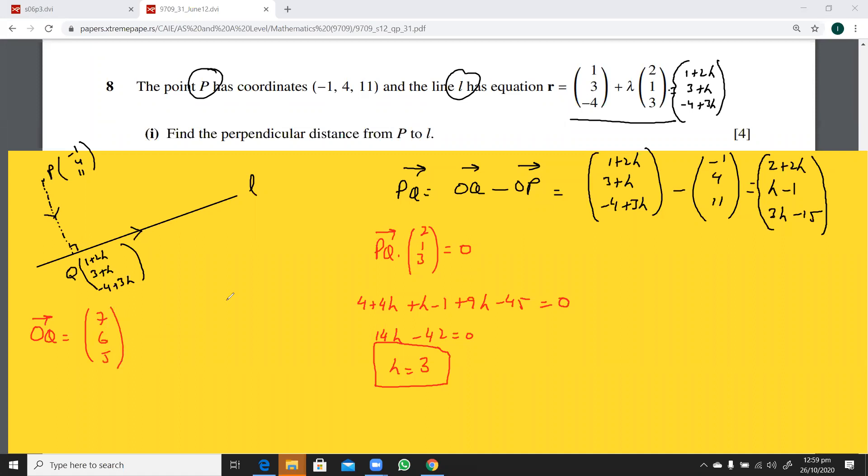But we have to find the distance. You see, it says the distance here. So, we need to put that into the PQ. So, this PQ now becomes, I'm putting it here, 2 plus 6 is 8, 3 minus 1 is 2, and 9 minus 15 is minus 6.